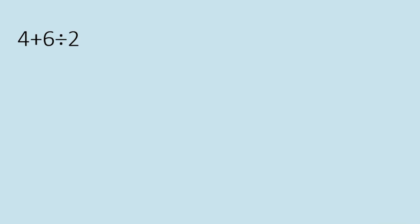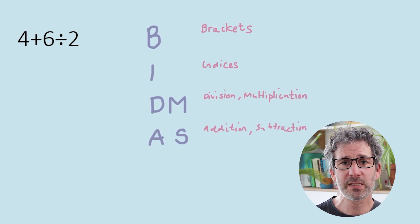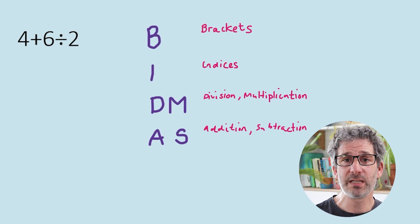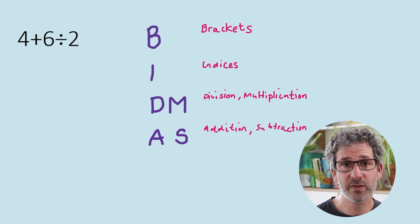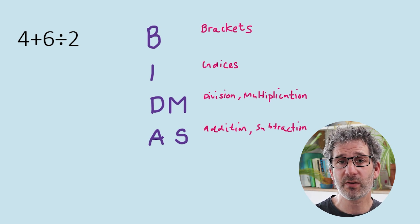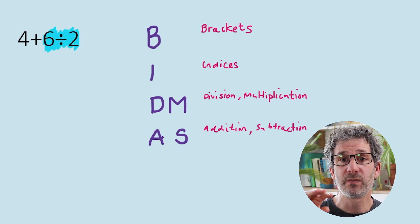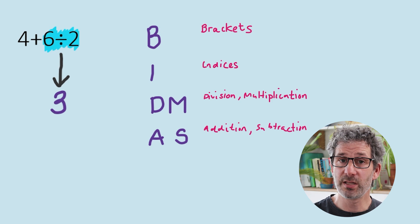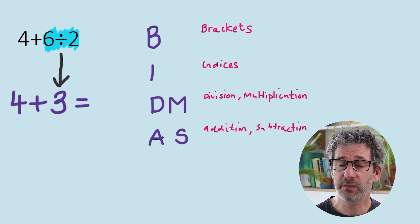Back to BIDMAS. Take 4 add 6 divided by 2. We haven't got any brackets, we haven't got any indices or powers of numbers, but we do have some division. So we carry out that division first — 6 divided by 2 is 3. The calculation then becomes 4 add 3, which is 7.